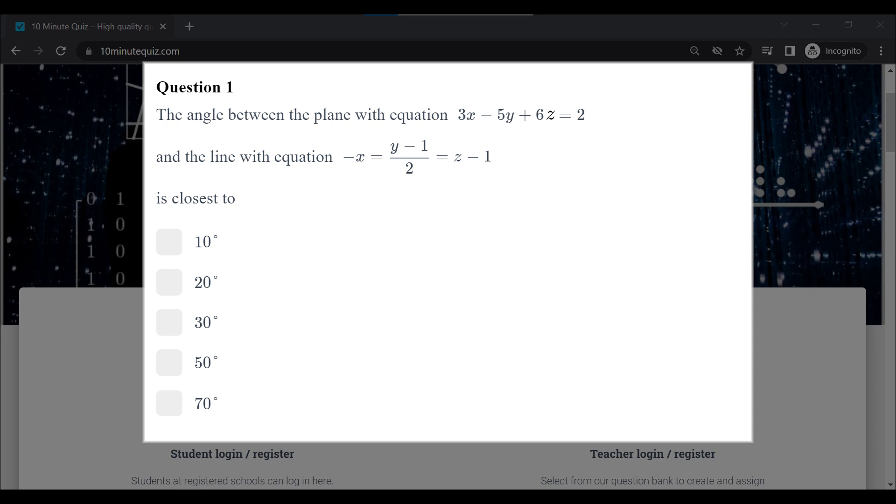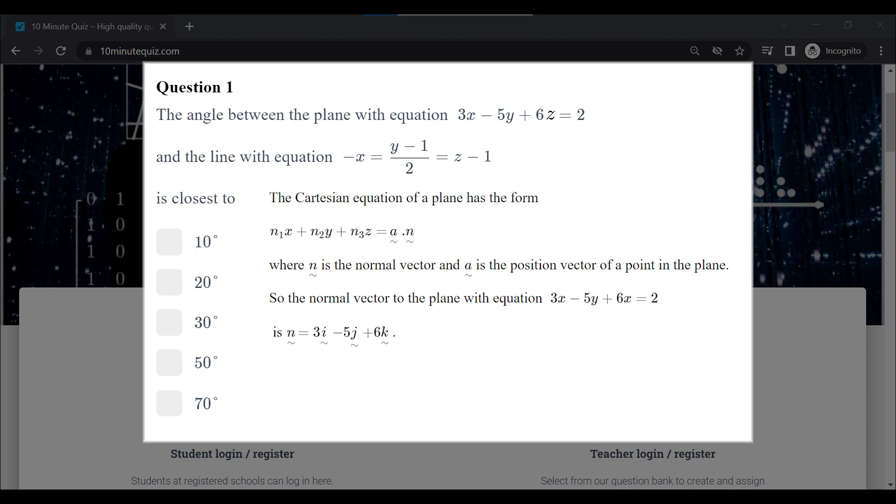Let's go back to our plane, which is 3x minus 5y plus 6z equals 2. The good thing about this form is it's actually quite easy to get the normal vector. In this form, the coefficients of x, y and z are actually going to give us the coefficients for the normal vector. So in this case, the normal vector is going to be 3i minus 5j plus 6k.